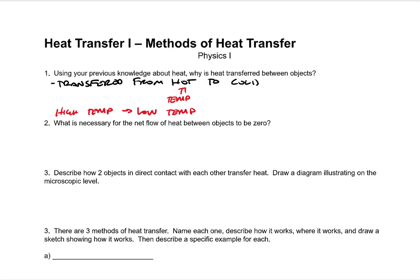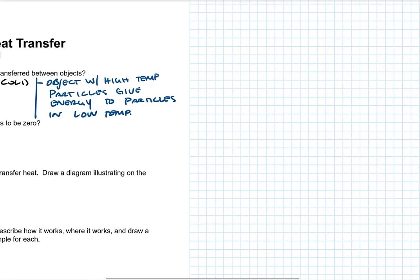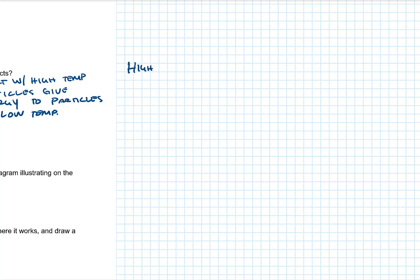That's what heat transfer is. And this heat transfer happens because the object with the high temperature, those particles, give energy to particles in the low temperature object. So hot particles, high temperature particles have on average, because that's what temperature is, more energy. So here we're going to go over here and talk about it. So for your high temp object, the particles, the molecules and the atoms have more energy on average.